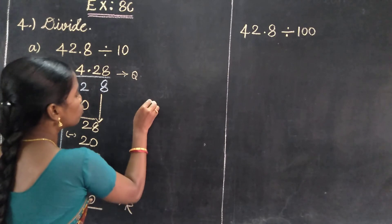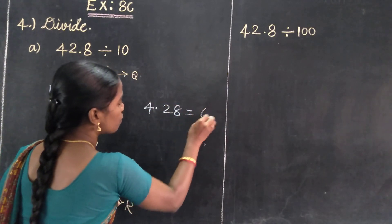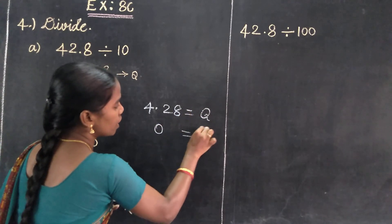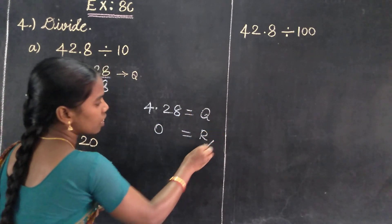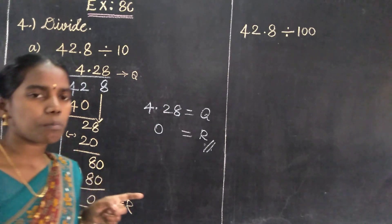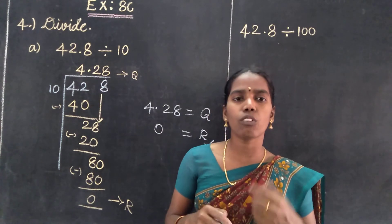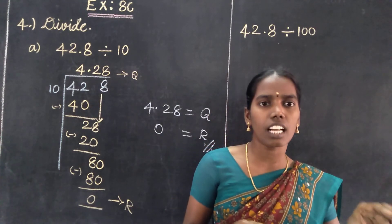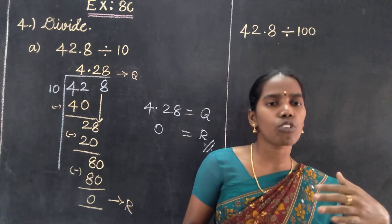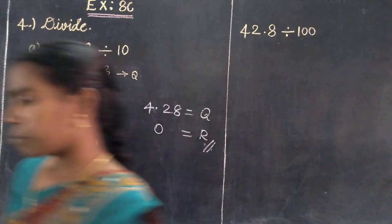So 4.28 is the quotient value and 0 is the remainder. Using normal division, when there are decimals in the dividend, place the decimal in the quotient and remove the decimal point from the dividend. So remove the point from the dividend and place it in the quotient. Thank you students.